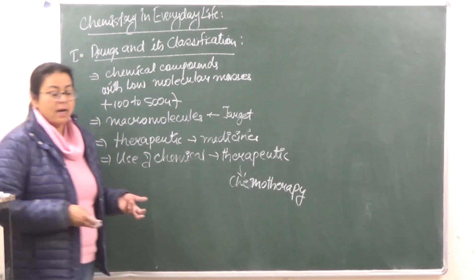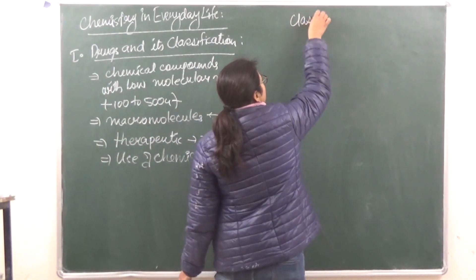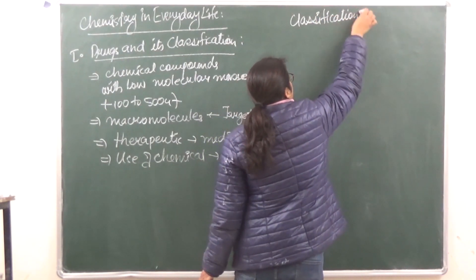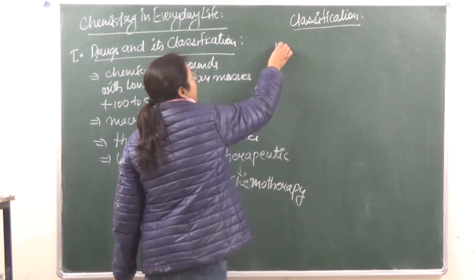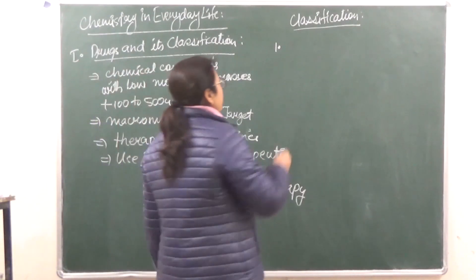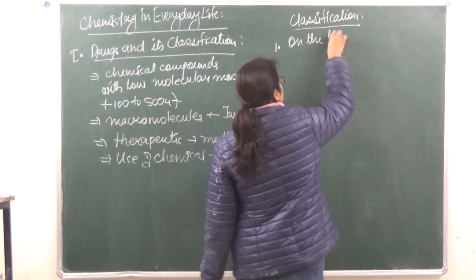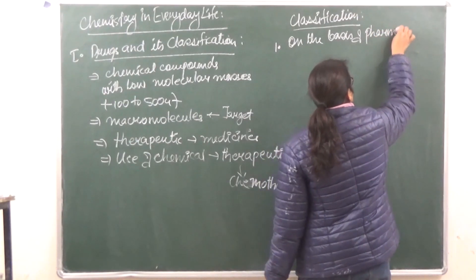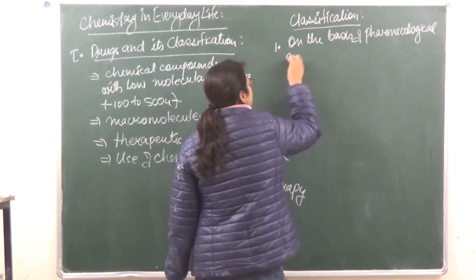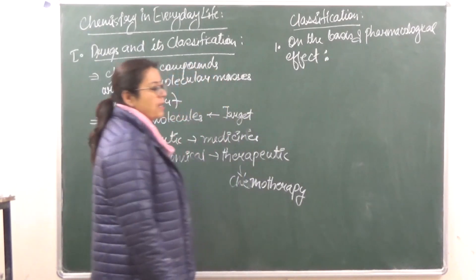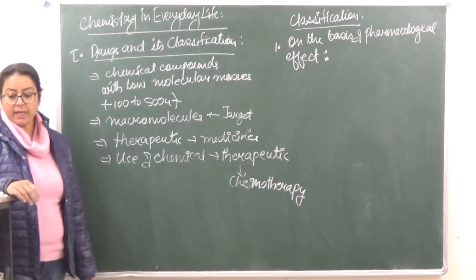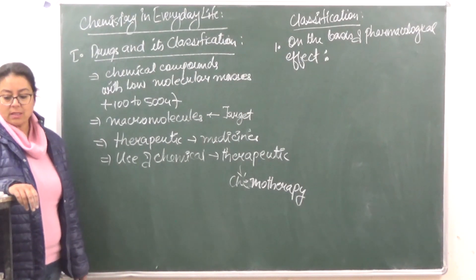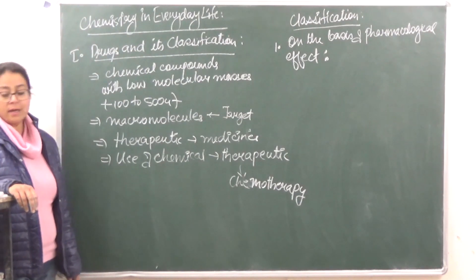Now when we're talking about classification of drugs, we classify them on the basis of different criteria. The first one is on the basis of pharmacological effect. This is the first basis of classification of drugs. Now in this case, it is based on the pharmacological effect of the drugs on the body. This is very important for doctors because it provides a whole range of drugs available for the treatment of a particular type of disease.